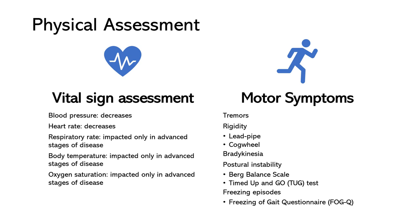Tremors are one of the hallmark motor symptoms of Parkinson's disease. They are involuntary rhythmic movements that typically occur at rest and often affect the extremities, such as the hands, fingers, legs, or jaw. Tremors in Parkinson's disease are called resting tremors because they tend to diminish or disappear during voluntary movement, and become more prominent when the affected body part is at rest. They're often described as a pill-rolling motion, where the fingers or thumb repeatedly rub against each other. However, they can also present in other forms, such as fine trembling or shaking of the hands or fingers. Not all patients with Parkinson's exhibit tremors, and the presentation of motor symptoms can vary from person to person.